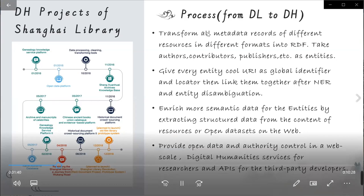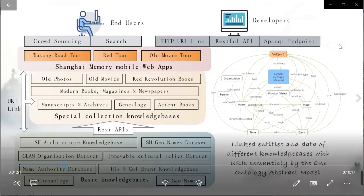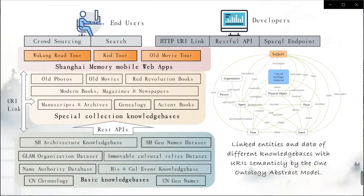We also provide digital humanities services for researchers and APIs for third party developers. Through the development of digital humanities projects, we have transformed the silos of digital library systems into interlinked knowledge bases based on linked open data technologies. Until now, we have built more than 20 knowledge bases with semantic data. The entities and data of different knowledge bases are linked with HTTP URIs semantically by one ontology abstract model, and the REST APIs are used to provide data services for all the others.